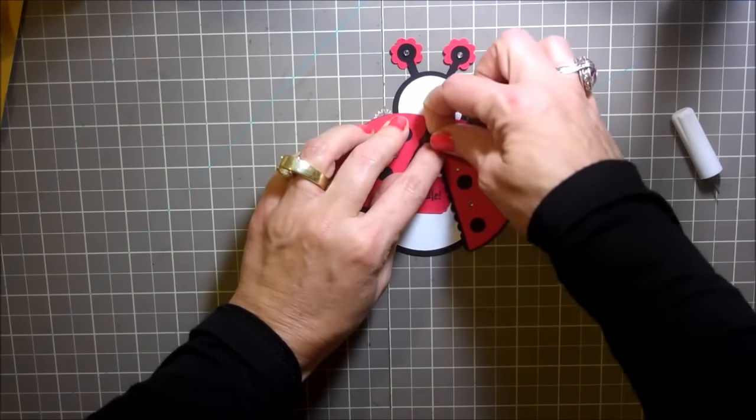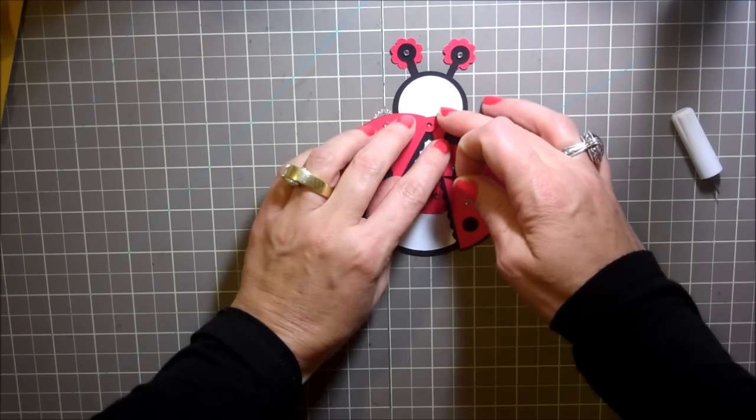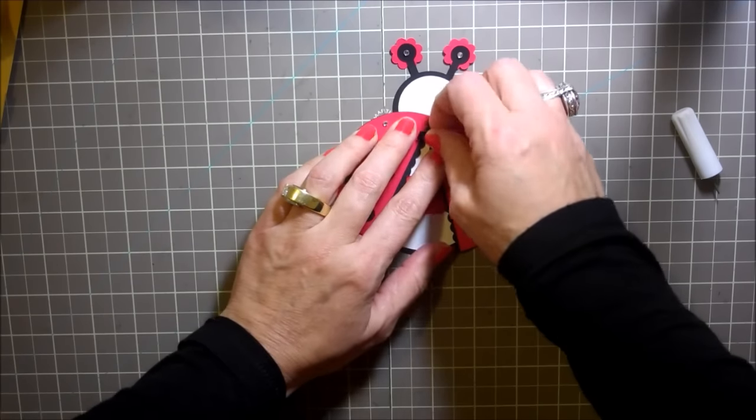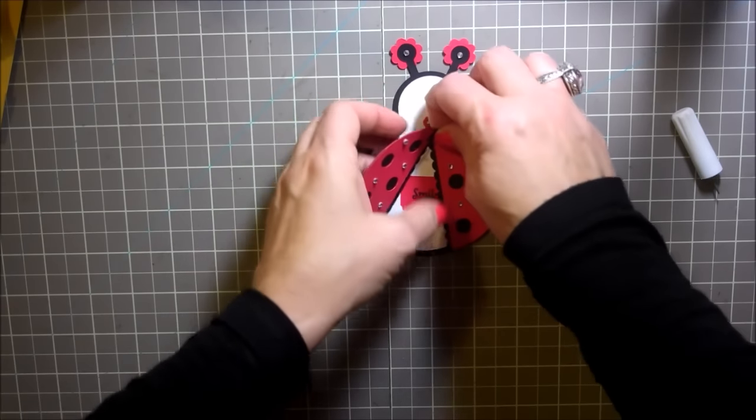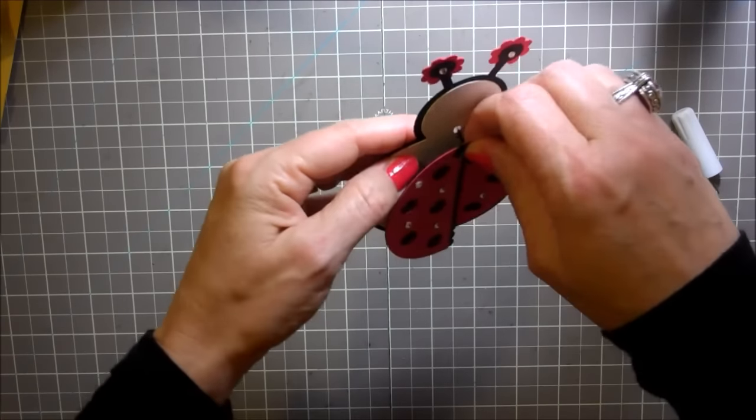The round brad that I had that was black or you could use a gem brad which would be cute too, but I'm just going to use this black one. The round black one that I had was so tiny it just fell through here. It was like a little mini brad.